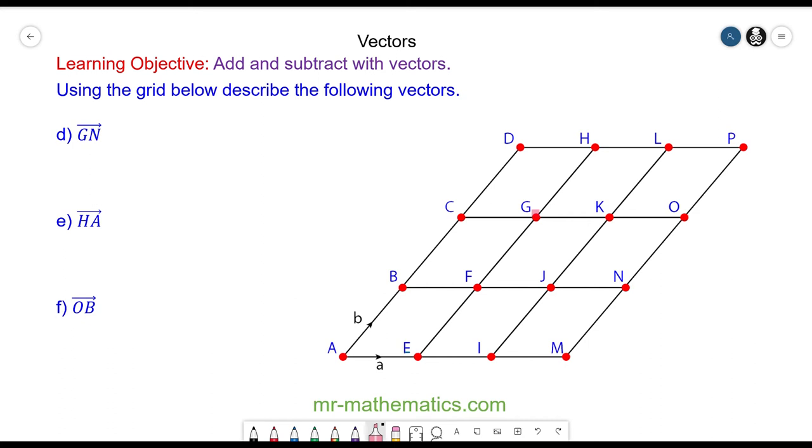Okay, from G to N we're going to go from G to O and then from O to N. We know G to K is A, and K to O is also A, and O to N is the same magnitude but the opposite direction, which will be minus B. So G to N is G to O plus O to N, which is 2A minus B.